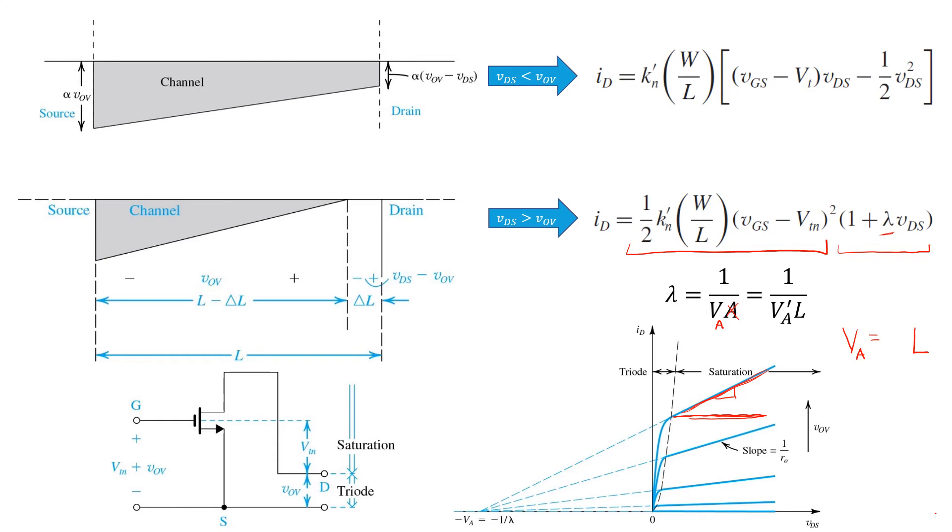The constant of proportionality between Va, also sometimes called the early voltage, and L, is Va prime. Now you can think of the value of Va as representing the point on the ID versus VDS plot where this part of the ID versus VDS curve, if extended back to the left, all the way to the negative real axis, would intersect. In fact, regardless of VGS, the plot will always intersect zero current, way back at a voltage of negative Va.